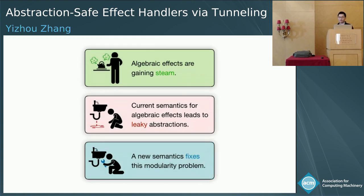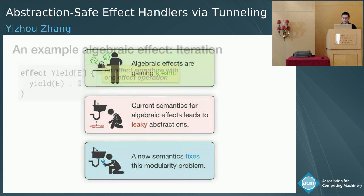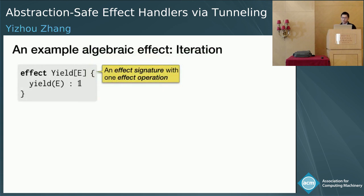Algebraic effects are gaining steam, but the current semantics for algebraic effects is incompatible with modular reasoning and can cause implementation details to leak through abstraction boundaries. This talk is about why this is the case and how to fix this serious modularity problem. First, let me explain algebraic effects from the programmer's perspective.